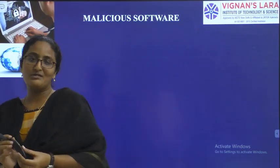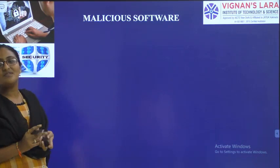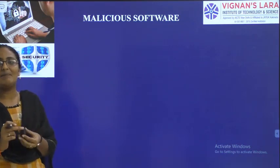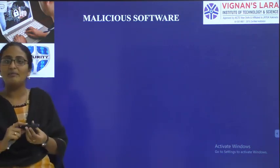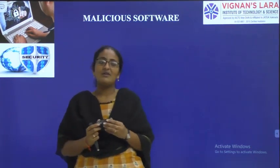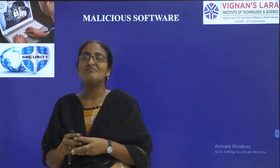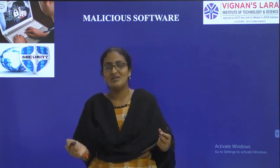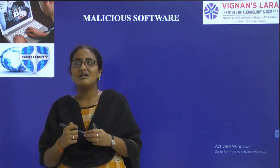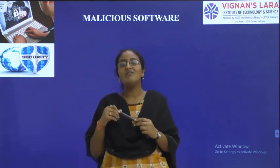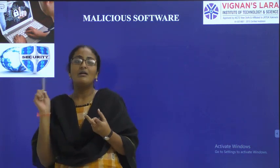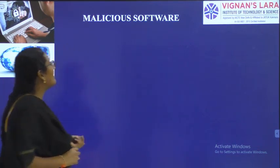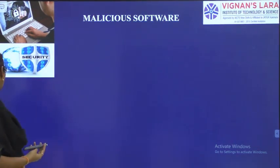Good morning everyone. Let us discuss what is malicious software today. We are in Unit 6 of CMS. Till now we have discussed IP security — its overview, architecture, benefits, and applications. We have two topics in Unit 6: first is IP security, and the second topic is system security, under which we need to discuss malicious software, firewall, and intrusion detection systems. First, what is malicious software — we can also call it a malicious program.